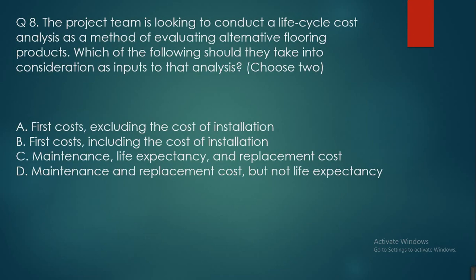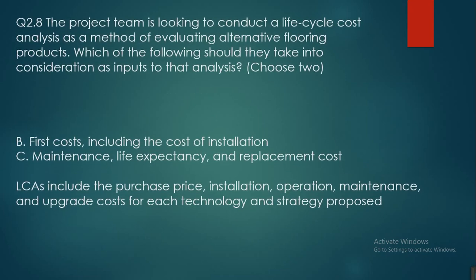Question eight: a project team is looking to conduct a life cycle cost analysis to evaluate alternative flooring products. Which of the following should they take into consideration as inputs? A — first cost excluding the cost of installation; B — first cost including the cost of installation; C — maintenance, life expectancy, and replacement cost; D — maintenance and replacement cost but not life expectancy. The answer is B and C — first cost including installation, and maintenance, life expectancy, and replacement cost — because life cycle assessment includes the purchase price, installation, operation, maintenance, and upgrade costs for each technology and strategy. That's all, thank you for your patience.